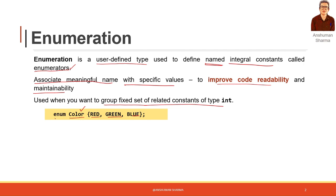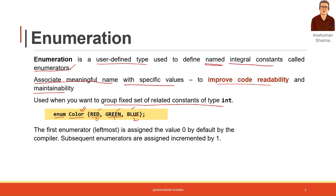In order to create it, you write enum followed by the name of the data type — the enumeration — followed by the values it can hold. These values by default will hold the values 0, 1, and 2. The first enumerator has the value 0 by default and subsequent enumerators are incremented by 1. You should know the difference between the enumeration and the enumerators.